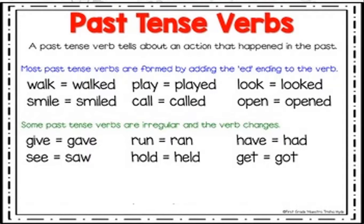Some past tenses are irregular and the verb changes altogether. For example, 'give' becomes 'gave' — not 'gived.' 'Run' becomes 'ran' — not 'runned.' 'Have' becomes 'had.' 'See' becomes 'saw' — I have heard many people say 'I seed it yesterday,' which is wrong English. 'Hold' becomes 'held' and 'get' becomes 'got.' These are irregular — they do not follow the rule of adding -ed.